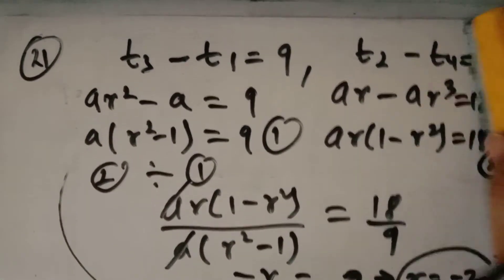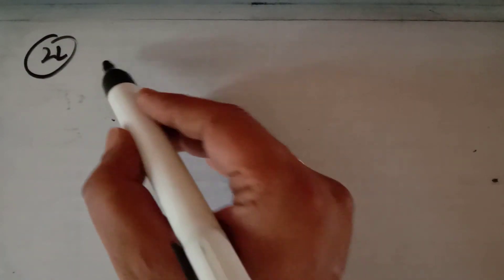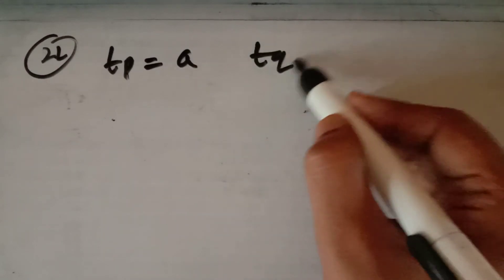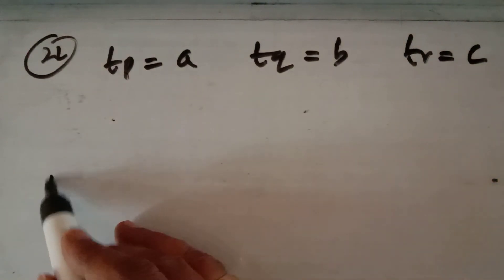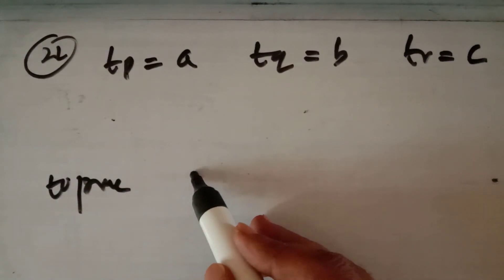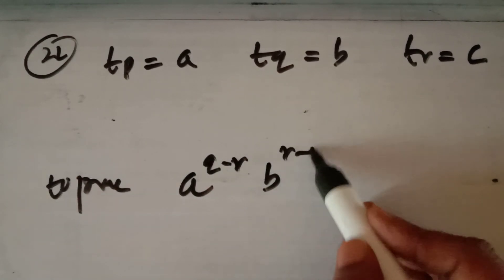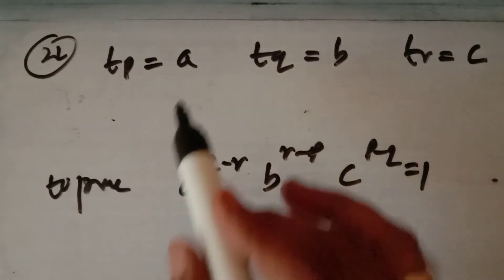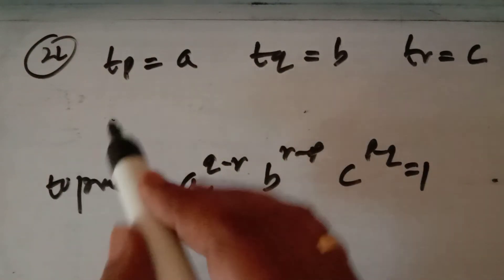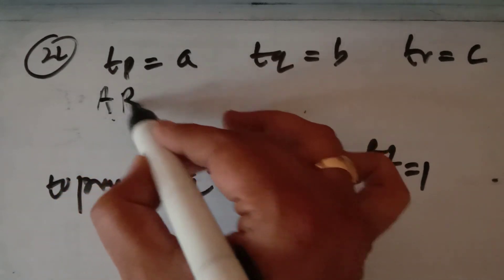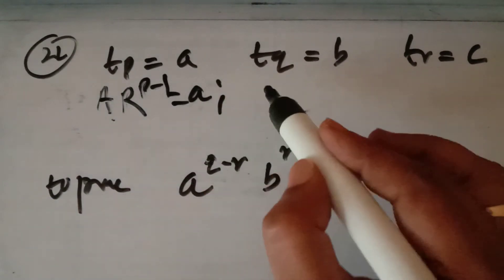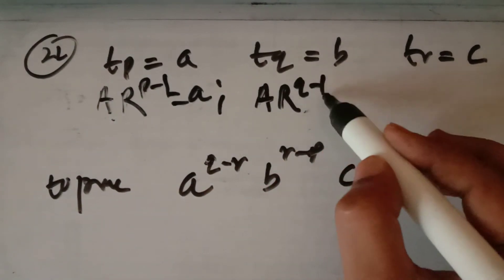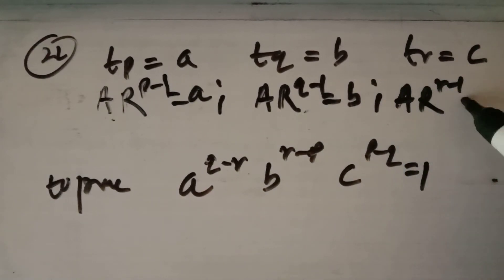Question number 22 is a good question. The pth term of a GP is given as a, the qth term as b, and the rth term as c. We must prove that a^(q-r) · b^(r-p) · c^(p-q) = 1. Let the first term of the GP be capital A and common ratio be capital R. Then: A·R^(p-1) = a, A·R^(q-1) = b, A·R^(r-1) = c.